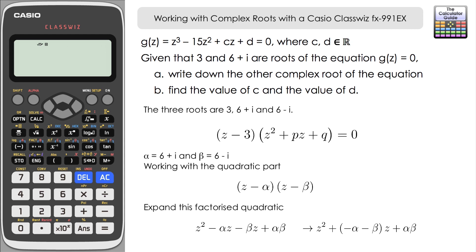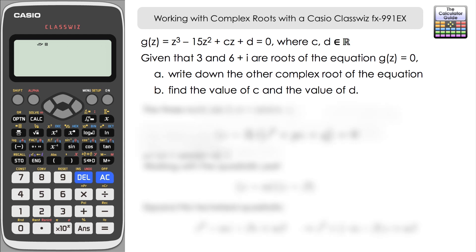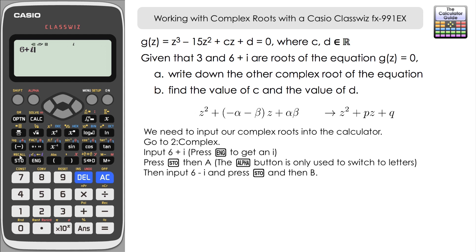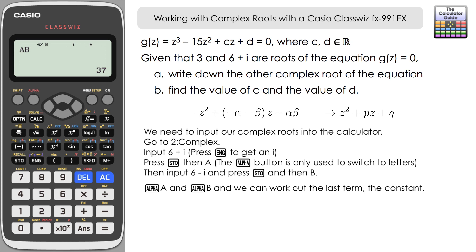We're going to use the calculator to find these coefficients. We'll input the complex values, using A and B since the calculator doesn't have alpha and beta. In complex mode, we store 6 plus i in A (our alpha) and 6 minus i in B (our beta). Then we compute A times B — that gives us the constant term Q — and we get 37. So alpha times beta equals 37, which is our Q value.